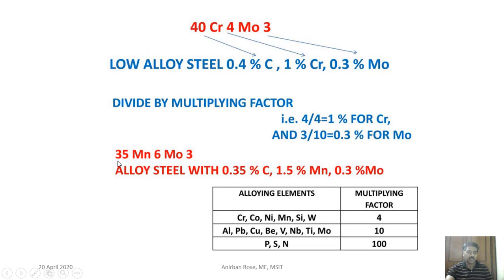Another example: 35Mn6Mo3. Carbon percentage is 0.35. For manganese, the multiplying factor is 4, so actual manganese percentage is 6 divided by 4 = 1.5%. For molybdenum, the multiplying factor is 10, so molybdenum percentage is 0.3%. This is how low alloy steels are designated.